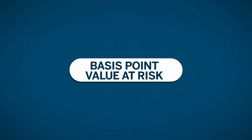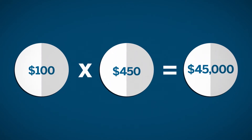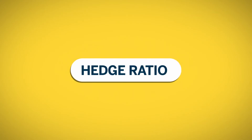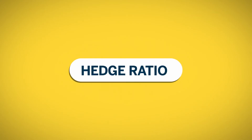The next step is determining the basis point value at risk. Since our portfolio is $100 million and the average BPV per million was $450, we have $45,000 basis point value at risk. Now we can calculate our hedge ratio using the following formula.